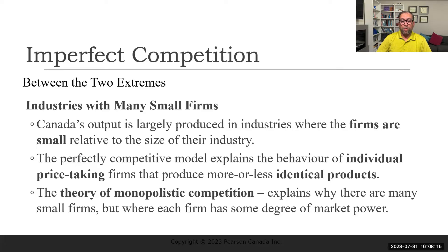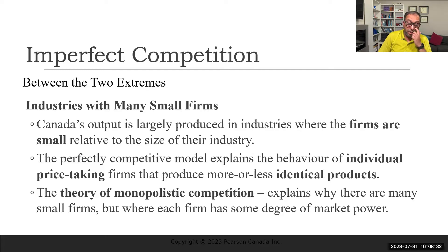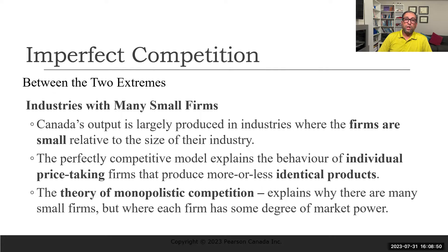The perfectly competitive model explains the behavior of price-taking firms that produce more or less identical products. Identical products means we cannot differentiate between them — like wheat grown by farmers of the same variety. We can't identify which farm produced it. The same applies to eggs, milk, vegetables, and gasoline purchased at a gas station — these are all identical products.